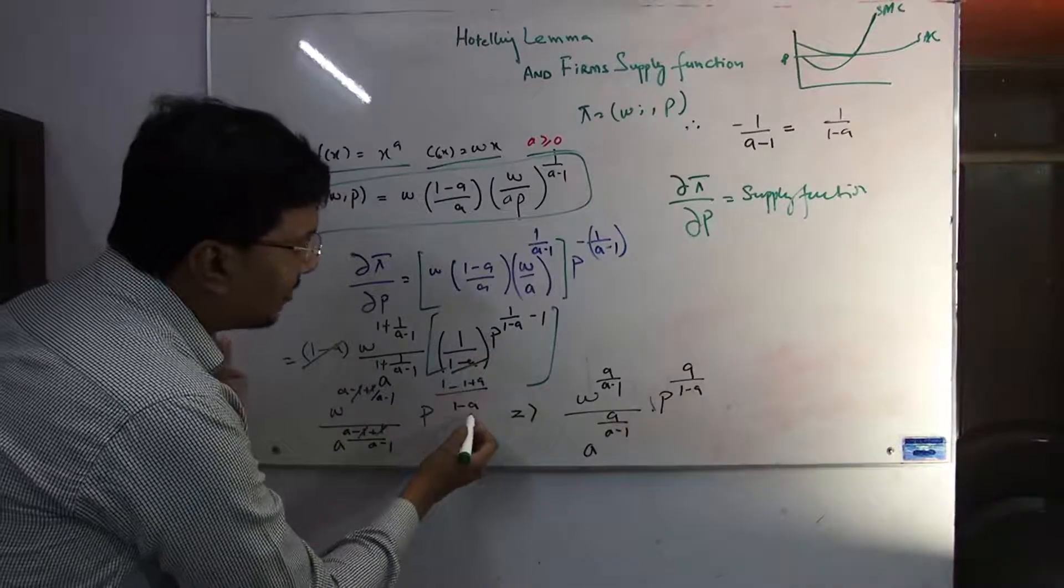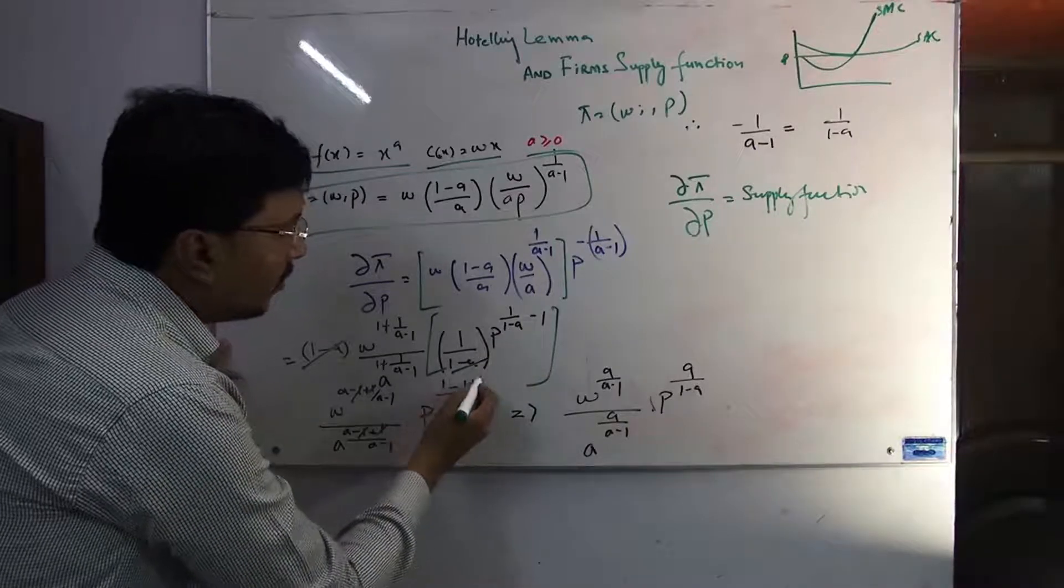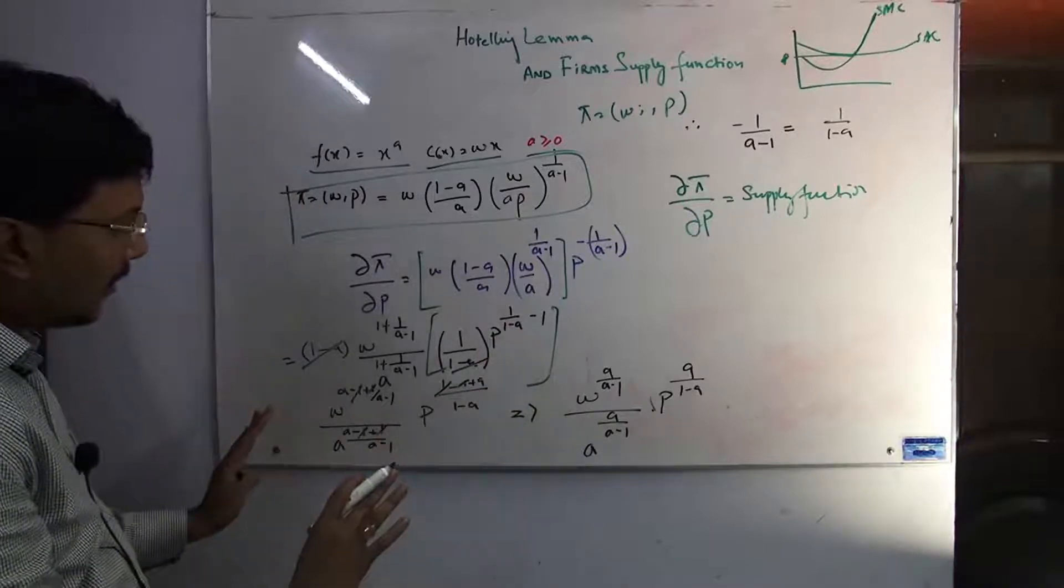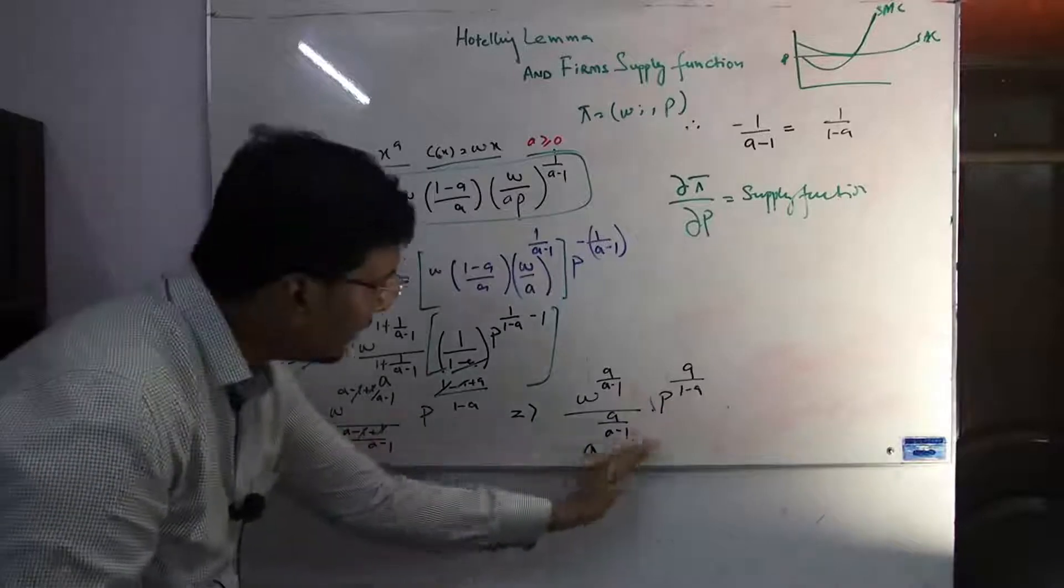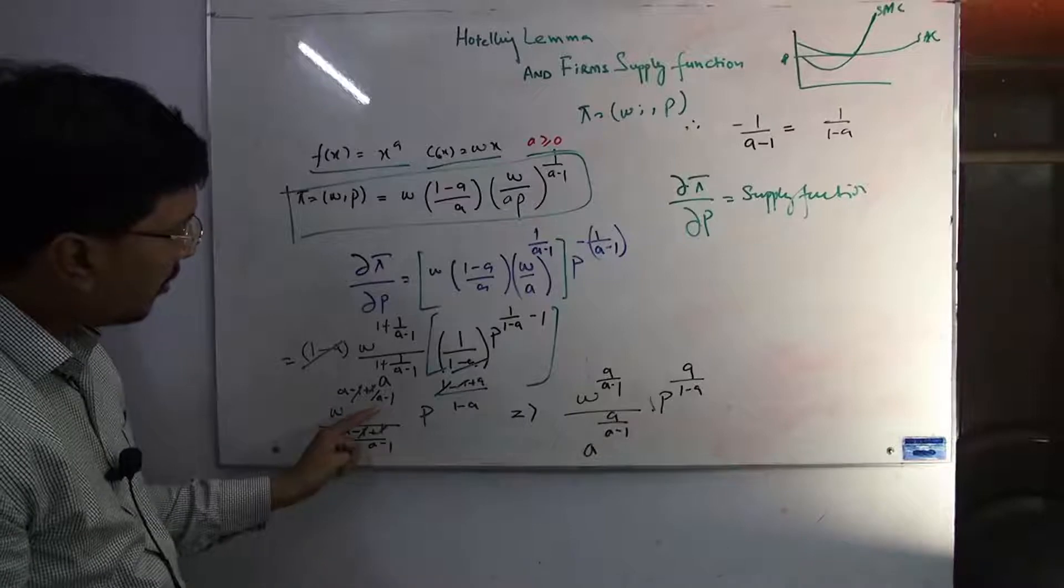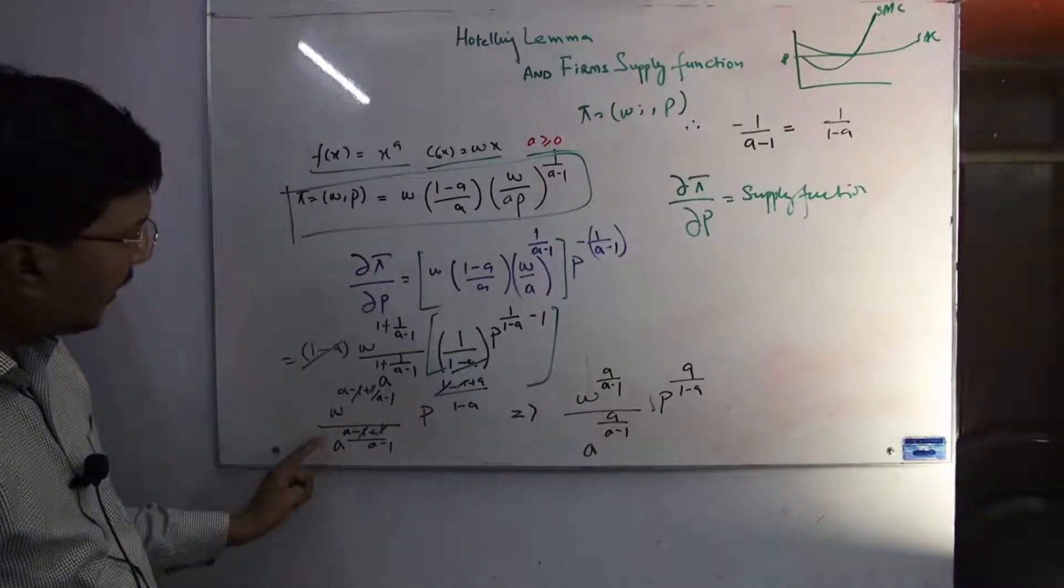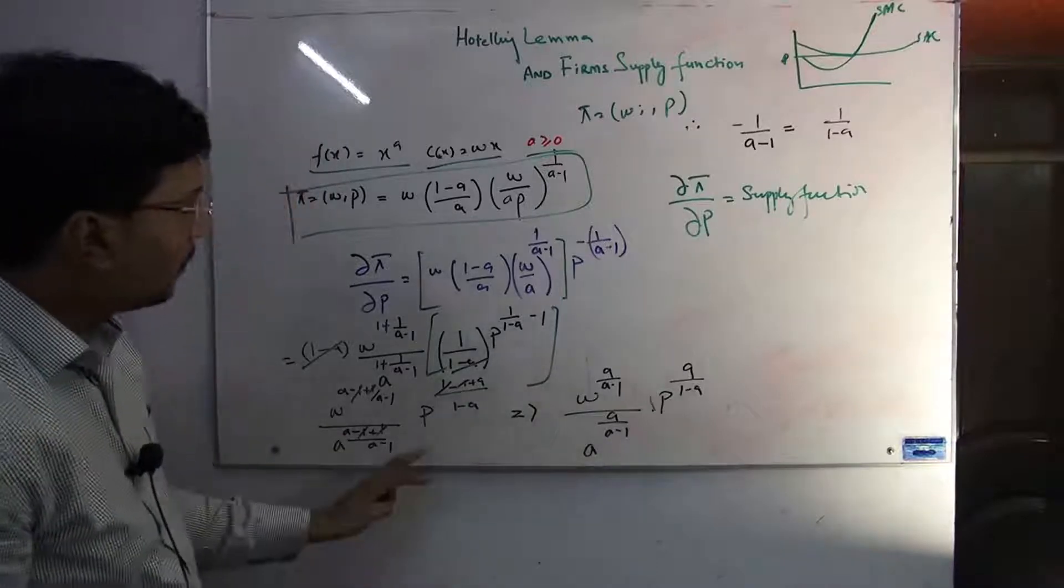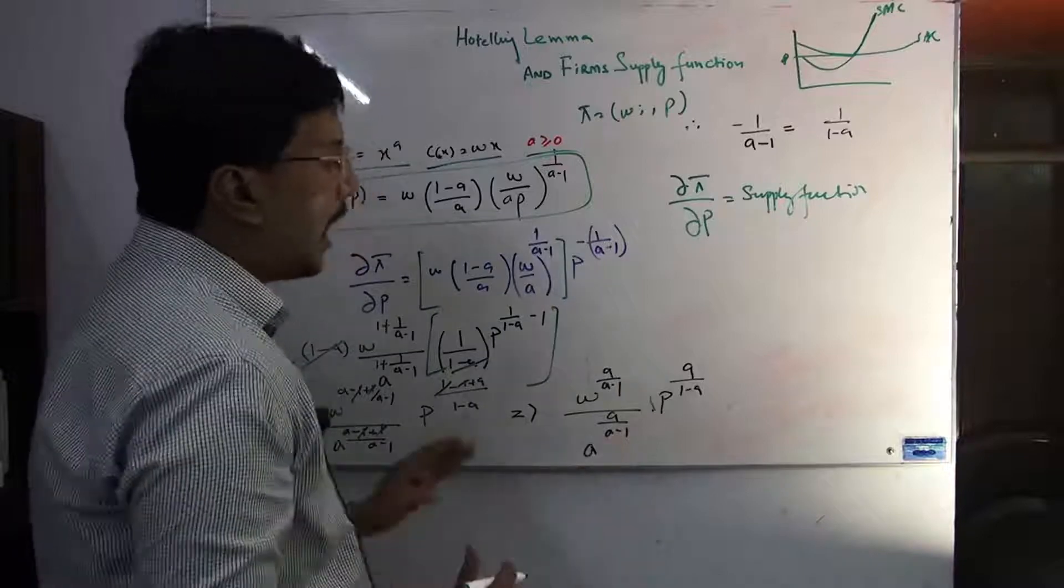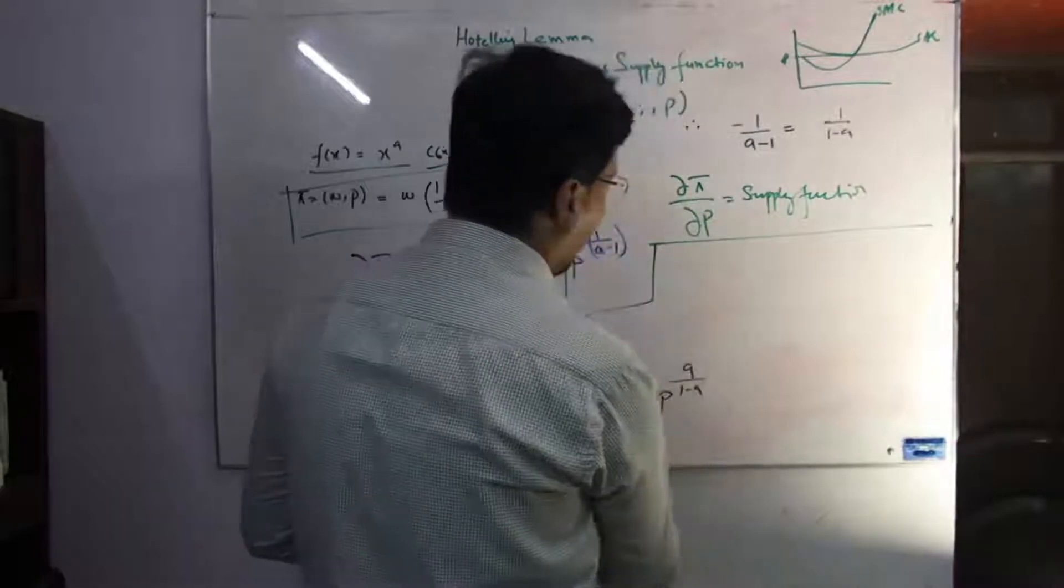Because of this minus, this became plus a. So this cancels again. Now the equation is easy. When we wrote this simply, how did we write it? w raised to power a/(a-1). See, a's power is a divided by (a-1), and p's power is a divided by (1-a). There's a whole difference now.